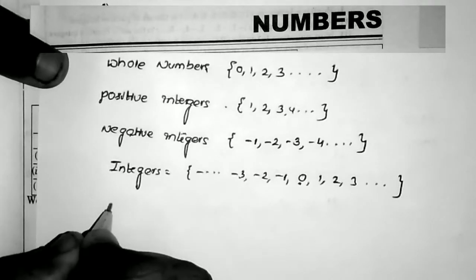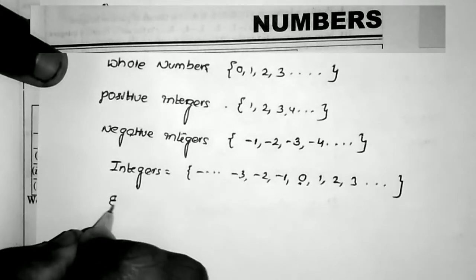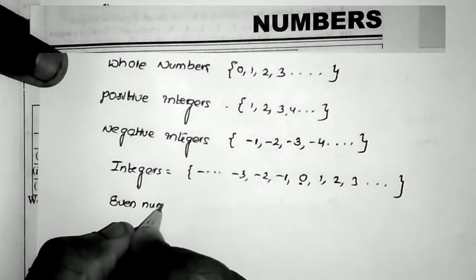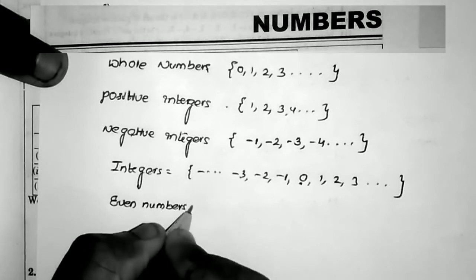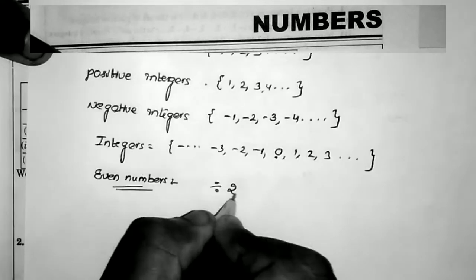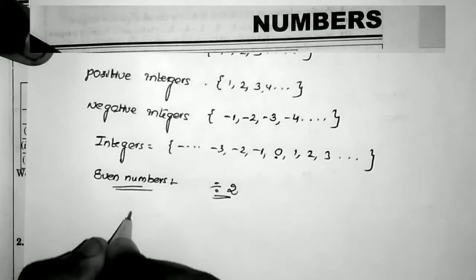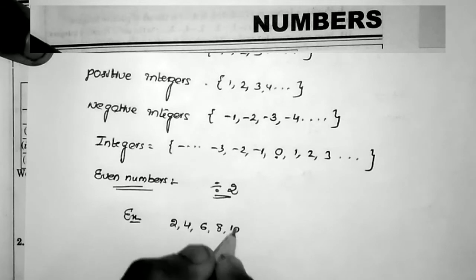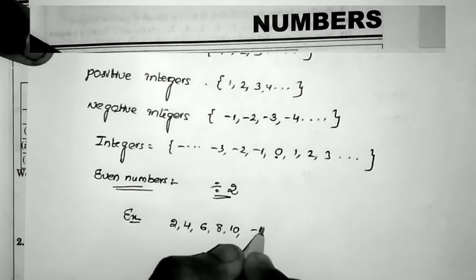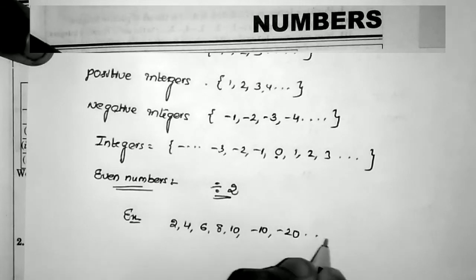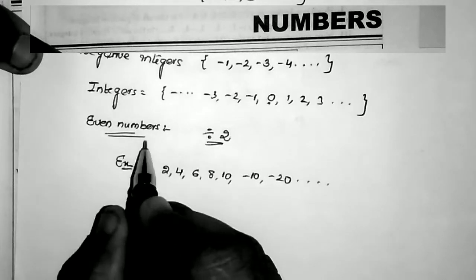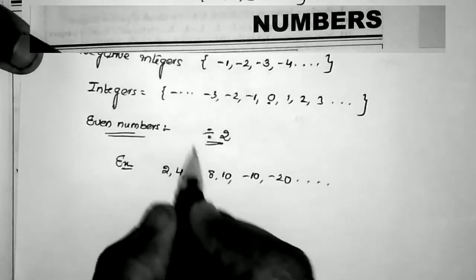Next type: even numbers. Even numbers are the numbers which are divisible by 2. Examples: 2, 4, 6, 8, 10, and also minus 10, minus 20. These are all even numbers — the numbers which are divisible by 2.